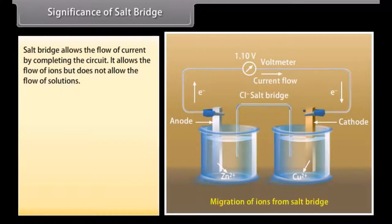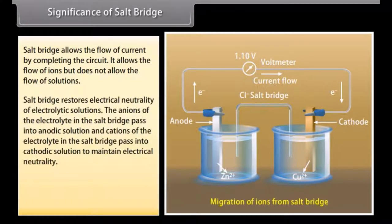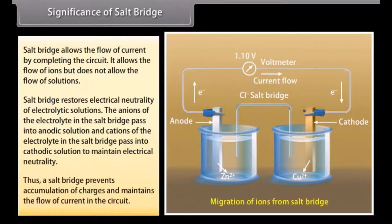Significance of salt bridge. Salt bridge allows the flow of current by completing the circuit. It allows the flow of ions but does not allow the flow of solutions. Salt bridge restores electrical neutrality of electrolytic solutions — the anions of the electrolyte in the salt bridge pass into anodic solution, and cations of the electrolyte in the salt bridge pass into cathodic solution to maintain electrical neutrality. Thus, a salt bridge prevents accumulation of charges and maintains the flow of current in the circuit.